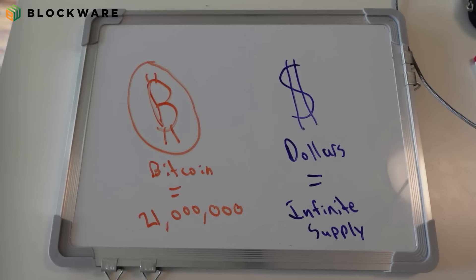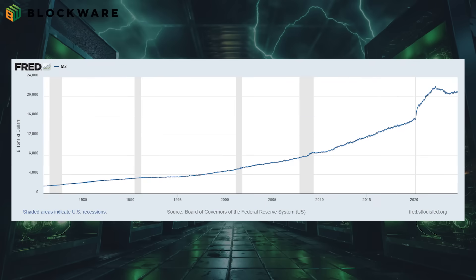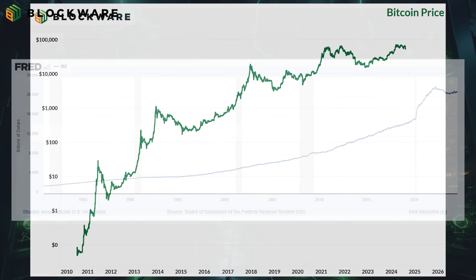The supply of Bitcoin is capped at 21 million, while the supply of the US dollar and other fiat currencies is essentially infinite, and it grows at a historical rate of roughly 7% per year.